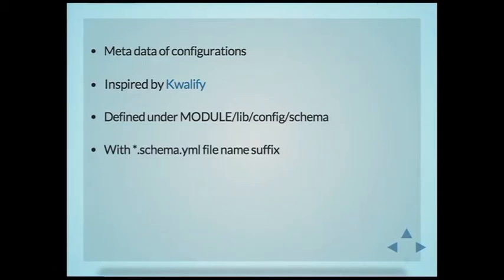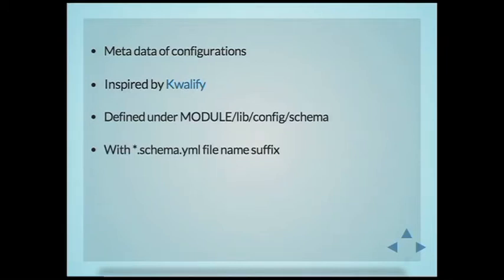So what is configuration schema? Since we used to save everything in the database, we had database schema — hook_schema — which explains what the database tables look like: what are the fields, what are the types, the lengths, everything. Configuration schema is exactly the same concept, but instead of database schema, it's all about configuration. The schema defines what a piece of configuration looks like — for example, site name — what type it is, and what the other properties of that configuration item are.